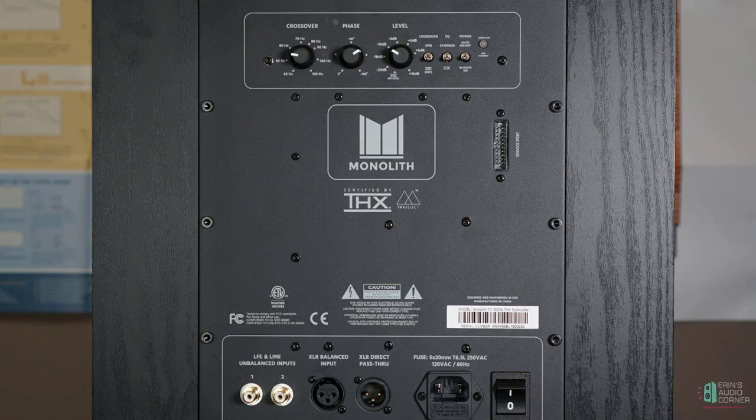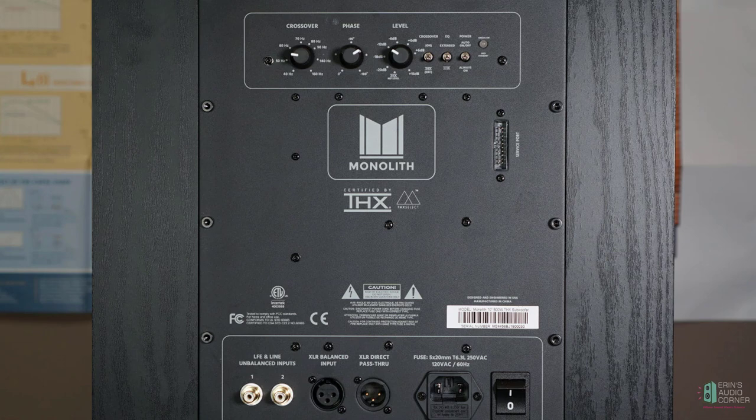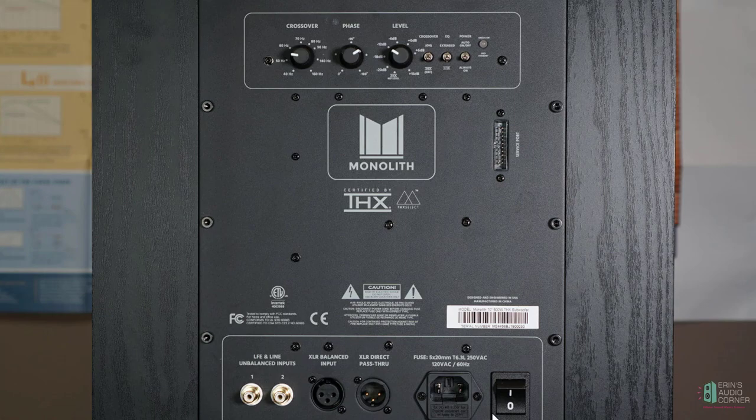On the back of the subwoofer, you have its standard set of features: crossover, phase, level, and then its EQ switch, crossover switch, auto on-off switch. And on the bottom, you have the LFE line unbalanced input, so just standard RCA, then you have a balanced XLR input and then a XLR pass-through, and then you have the master switch.